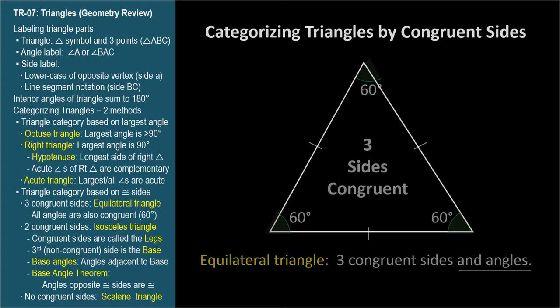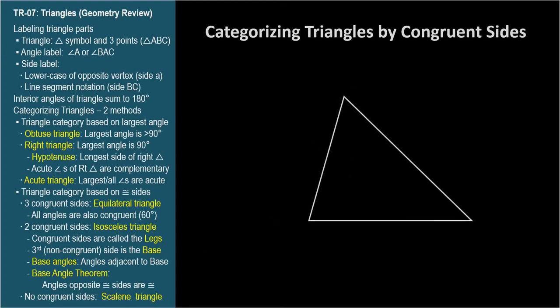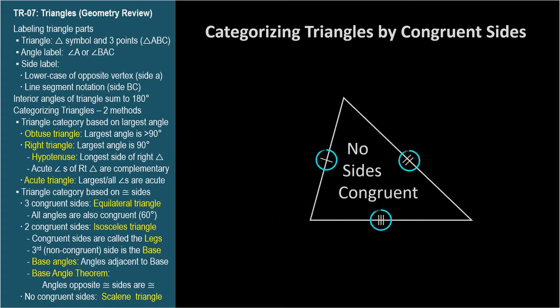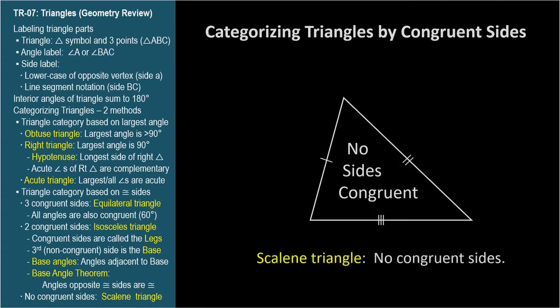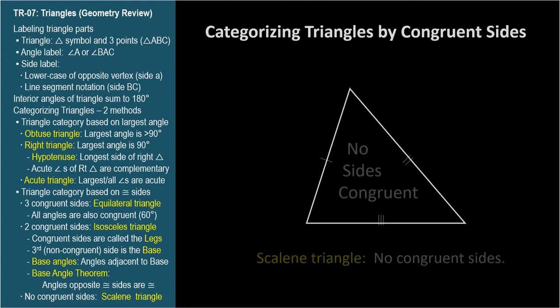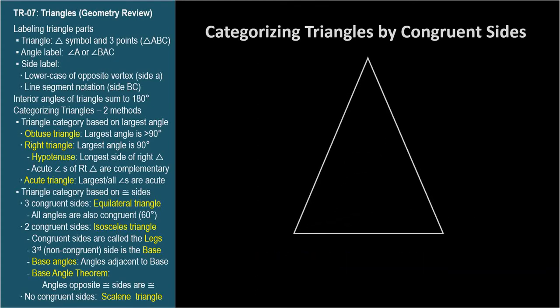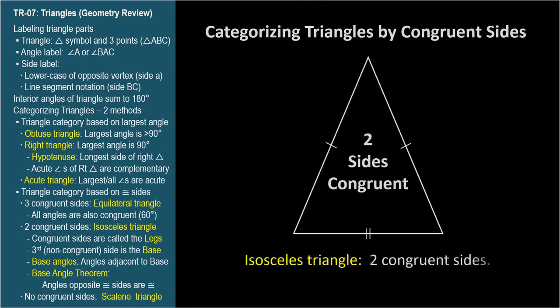When no sides of a triangle are congruent, it's a scalene triangle — a triangle whose sides are all different lengths. When two sides of a triangle have the same length, the triangle is an isosceles triangle.